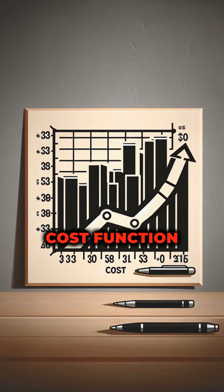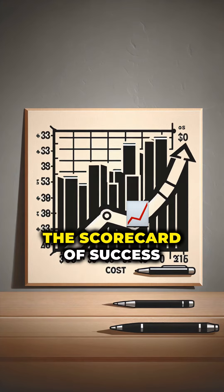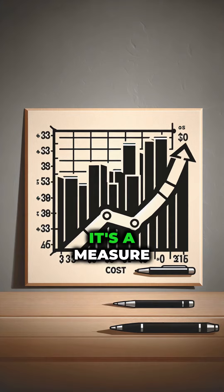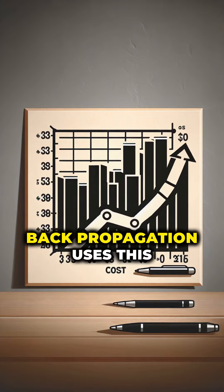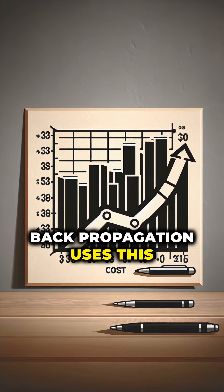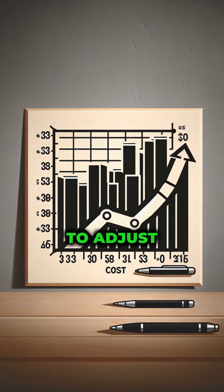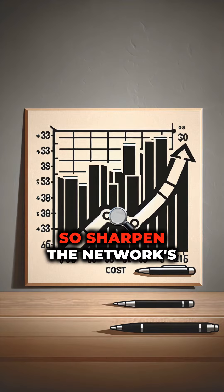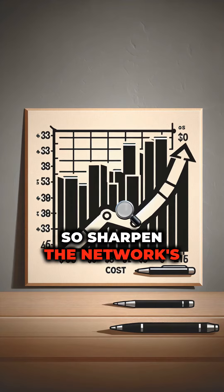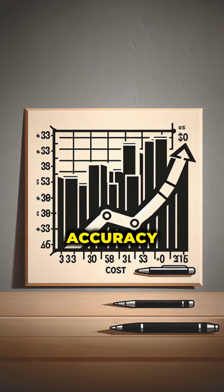Cost function: the scorecard of success. It's a measure of how far off our predictions are from the actual results. Backpropagation uses this to adjust, aiming to lower the score, and in doing so, sharpen the network's accuracy.